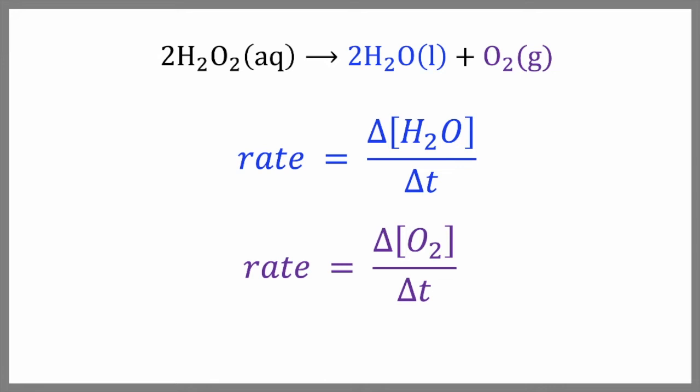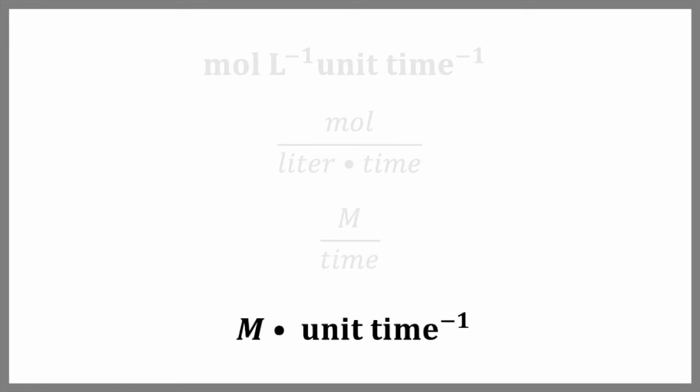The units for reaction rate are moles per liter per unit time. And that's because concentration is in moles per liter, and we are dividing this by time. We could also say molar per unit time, or molar times time to the negative one, where molar equals moles per liter. Often our time is in seconds, so sometimes we'll use the term molar per second, and this is the same as moles per liter per second. So get used to seeing units in all these different forms.